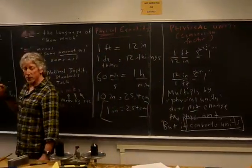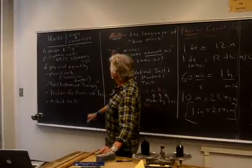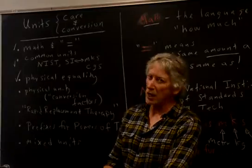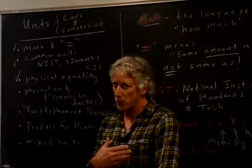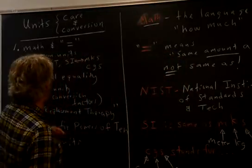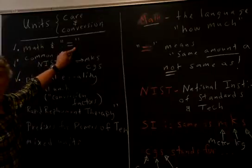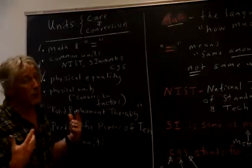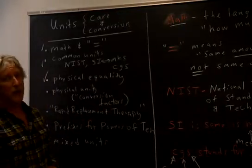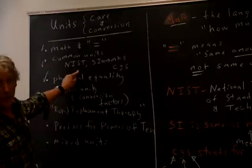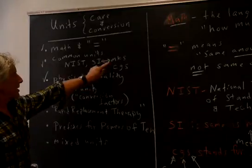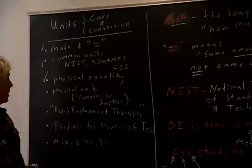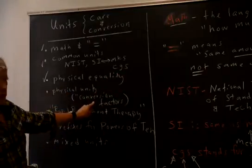Here's our list of what we're going through. We're covering conversion of units. We talked about math and equality. The NIST sets the standard for what exactly we want to call a meter, or at least how precisely. The SI, also called the MKS system. The CGS system, physical equality, physical unity, or conversion factors.